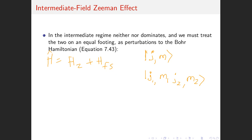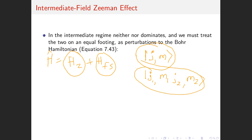For the intermediate Zeeman effect, neither of these effects is the dominant one — we don't really know which set of good quantum numbers to use. So what we are going to do instead is write this as a linear combination in terms of the other ones. In order to do that, I first have to review the theory of addition of angular momentum.